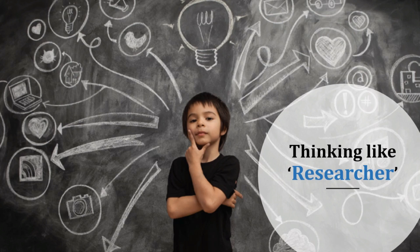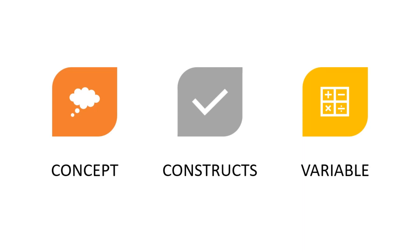So how we can think like a researcher, and how these different terminologies are going to have a better impact on our research if we are aware about these research words and terminologies. The research concepts, research construct and the research variable — these are the three primary things that you require for research problem formulation.